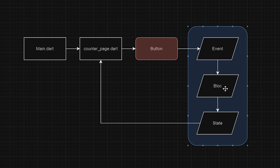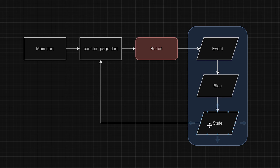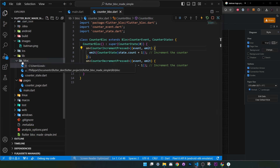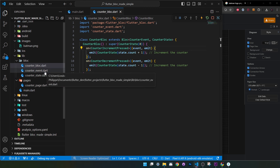Let's make sure you understand how BLoC works. We have the main, then the counter page. When you click a button inside the counter page, this triggers an event. The event goes inside the bloc machine and releases a new state — in this app, a state with a new Batman logo. The event, the bloc, and the state are always one thing together. Inside my application you can see I have a bloc folder containing the bloc, the event, and the state — you need all three for each action.